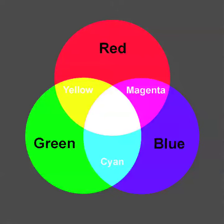So these are the six colors of our color wheel: red, green, blue, yellow, cyan, and magenta.